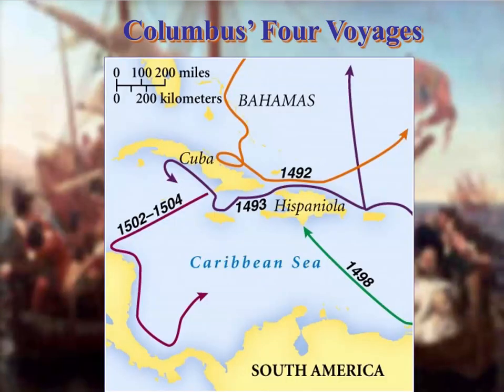Columbus's major problem was that he always thought he had reached the Indies — that is, Indonesia — which is why the Caribbean is sometimes called the West Indies. His real error was that he grossly underestimated the circumference of the earth, which is why he thought he had found Southeast Asia. It really isn't until the Italian Amerigo Vespucci sailed down the coast of South America that it was acknowledged this was somewhere completely different — which is why the continents are called North and South America, not North and South Columbia.